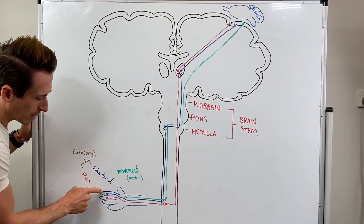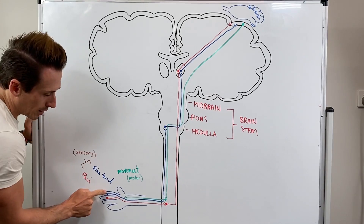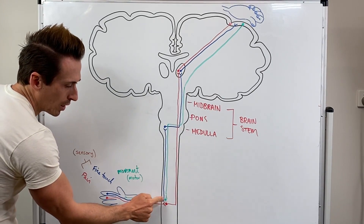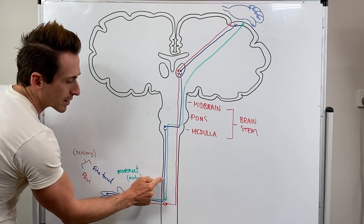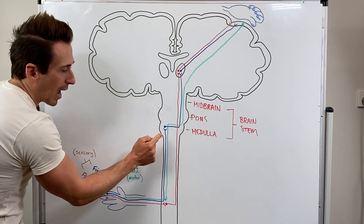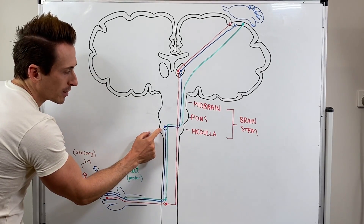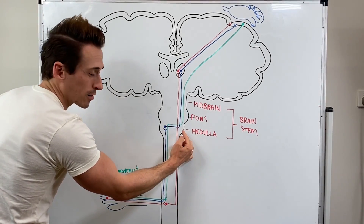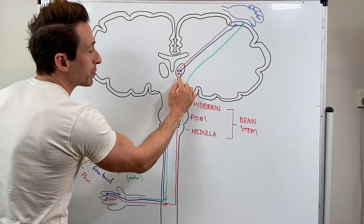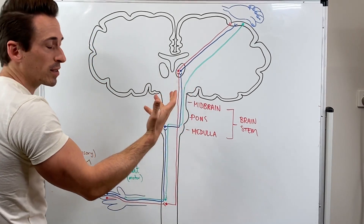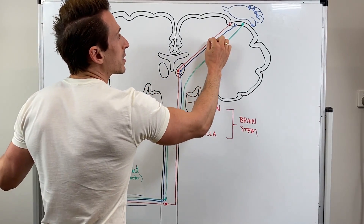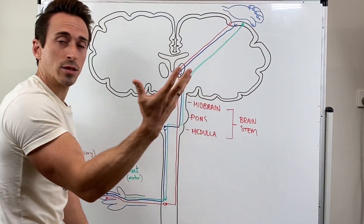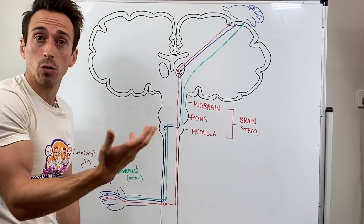Let's first start with fine touch. Somebody tickles your hand, that signal goes down your arm into your spinal cord. This is the blue line — it enters the spinal cord and moves up the same side it enters. At the brain stem it synapses with the second neuron, which then crosses to the other side, goes up to the thalamus — the sorting center — and sends that signal up to the cortex on the opposing side that deals with the hand.